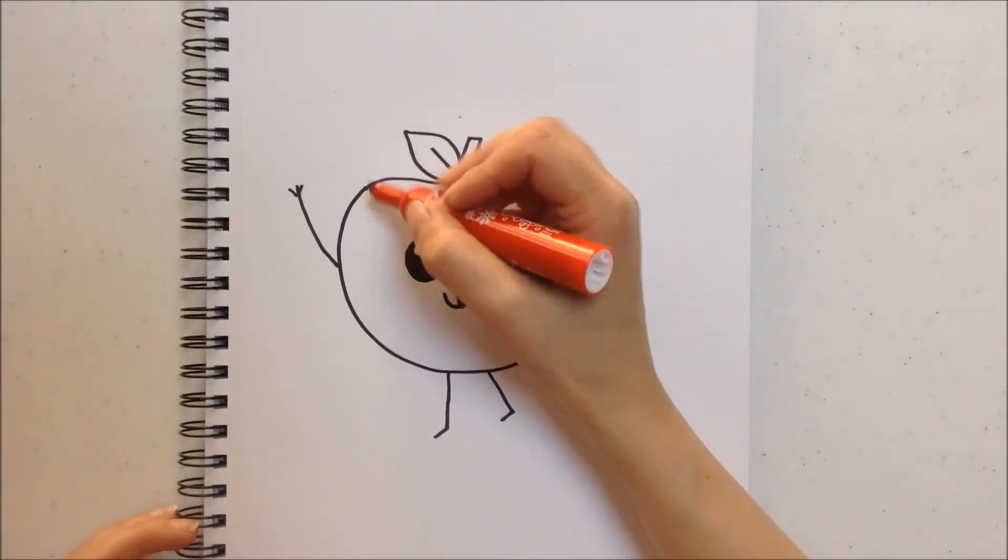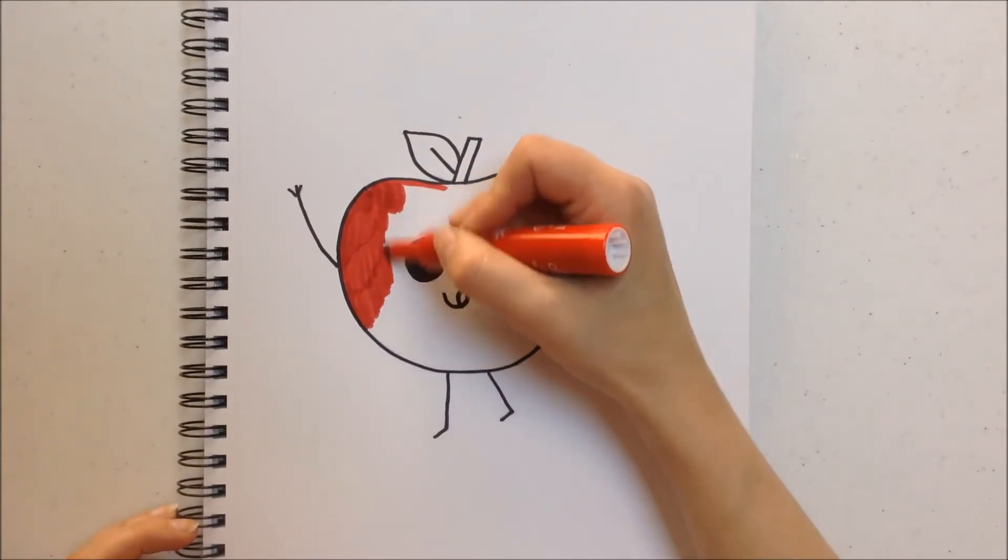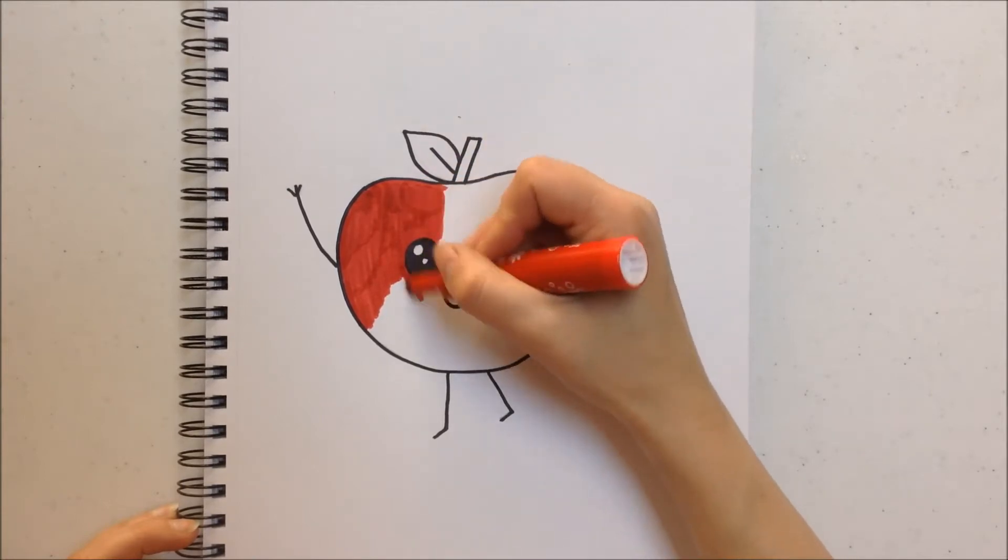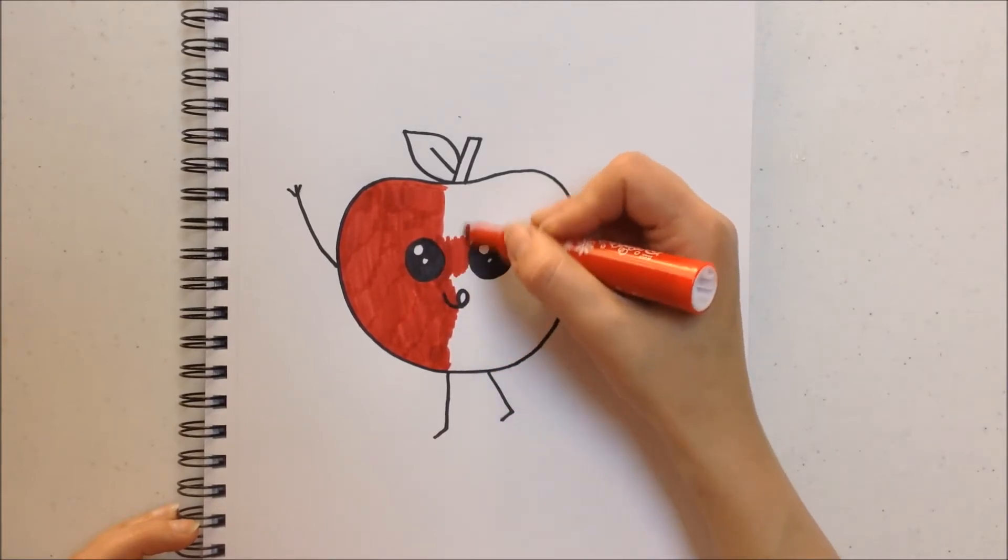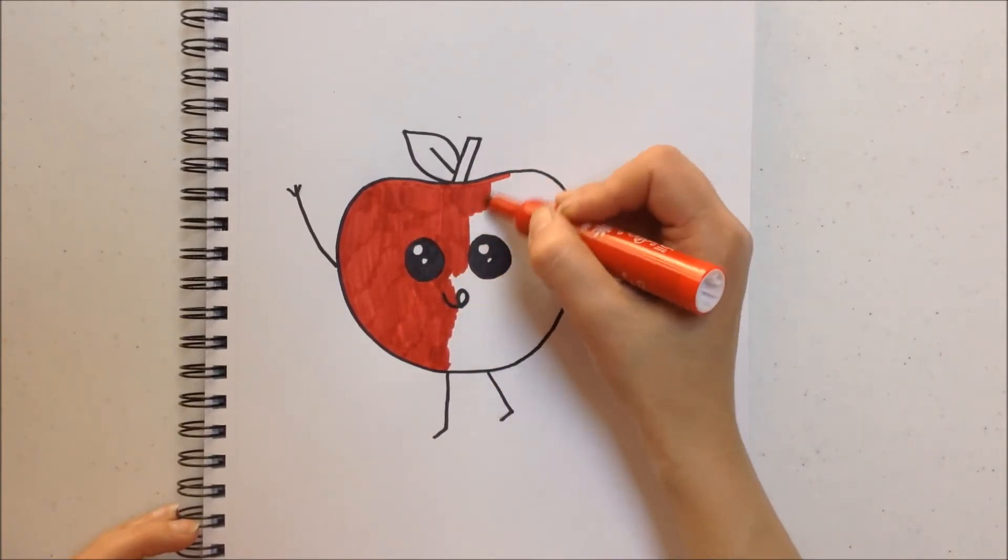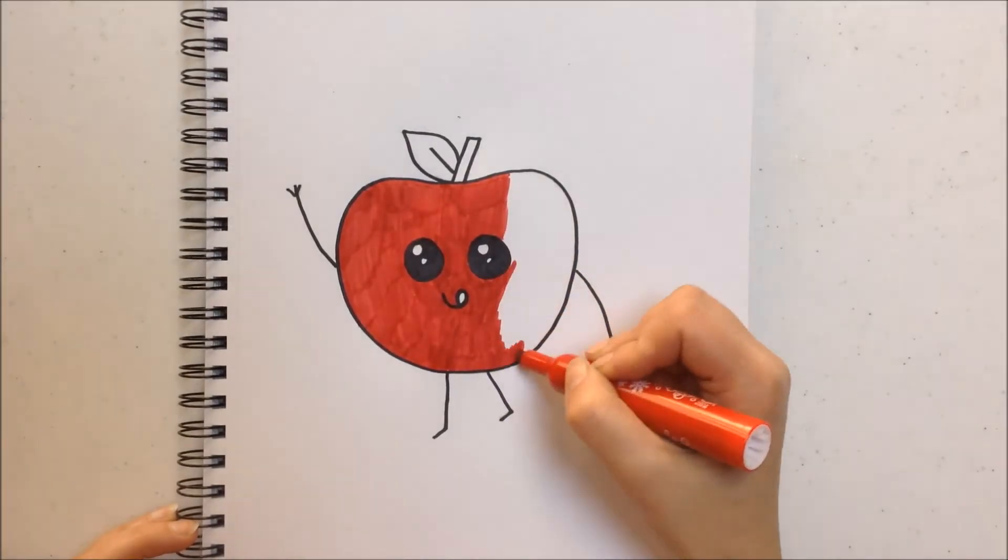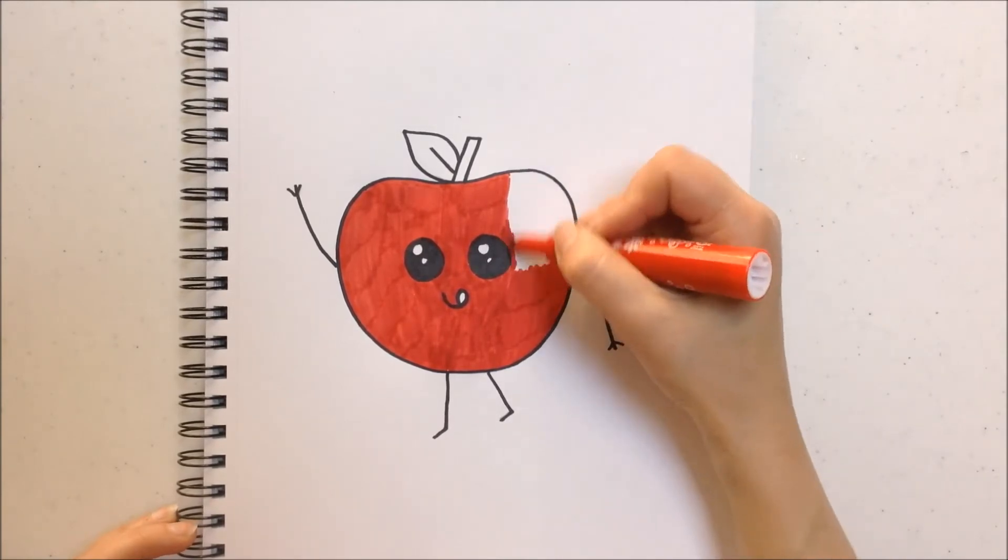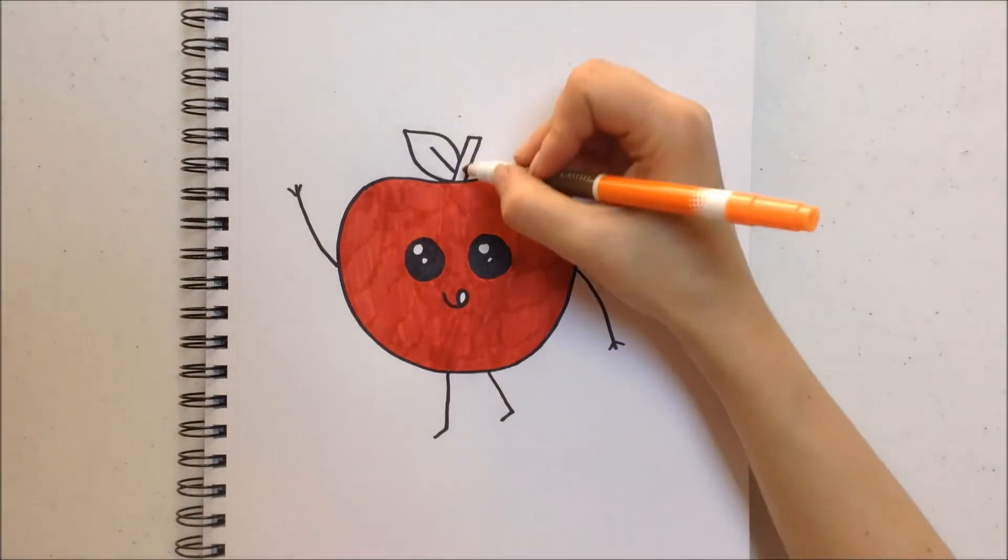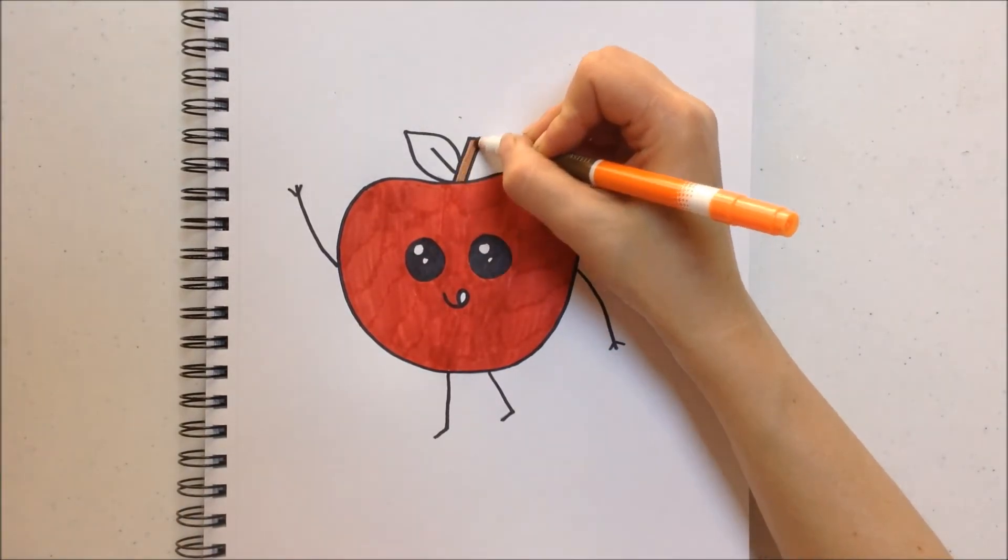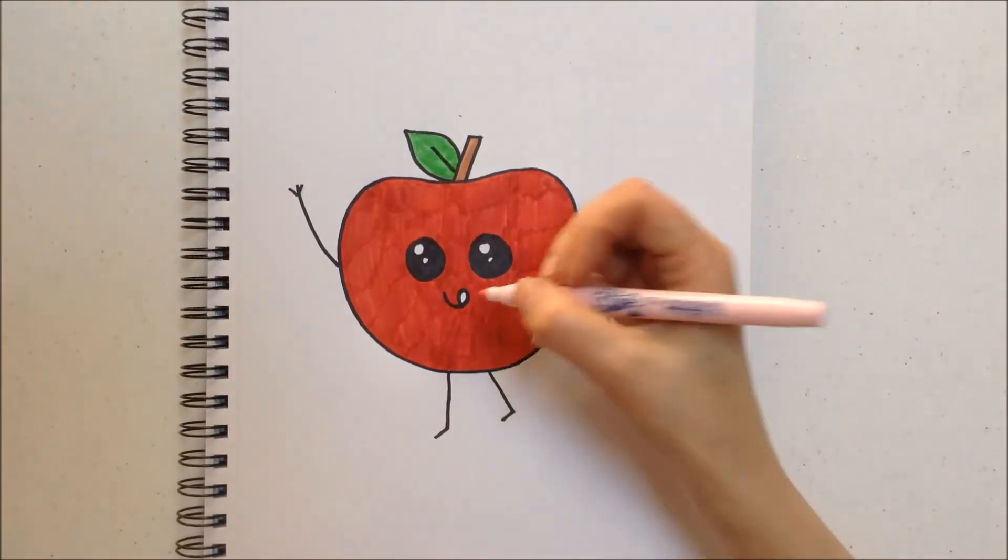And color in the apple red. Brown for the stem. Green for the leaf. And light pink for the tongue.